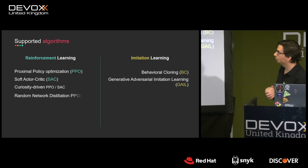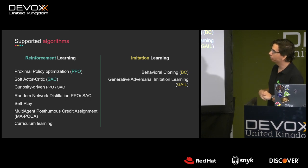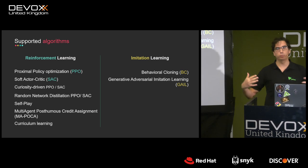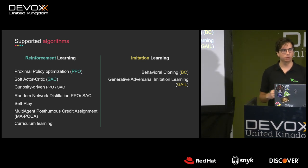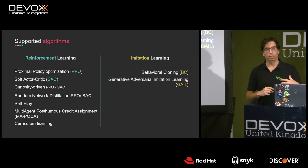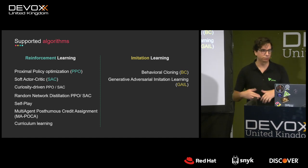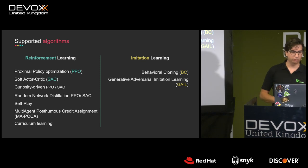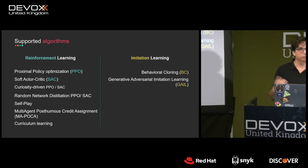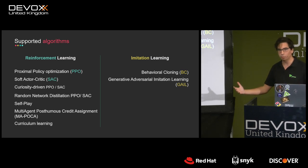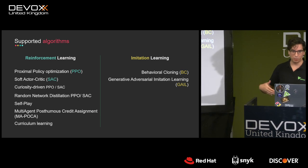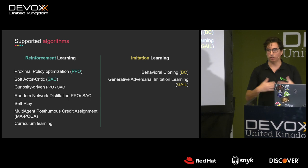The supported algorithms include Proximal Policy Optimization (PPO) for reinforcement learning, which is a general-purpose algorithm, and Soft Actor Critic (SAC), an off-policy algorithm that can learn from past experiences — very good when you don't have many samples. For imitation learning, there's Behavior Cloning, which simply imitates recorded behavior, and Generative Adversarial Imitation Learning (GAIL), which takes an adversarial approach to what you've pre-recorded to learn the desired behavior.